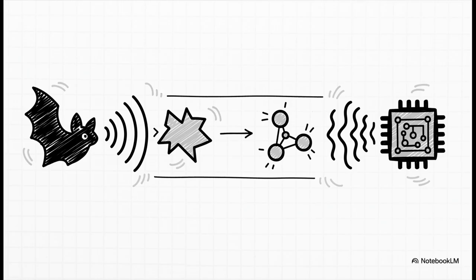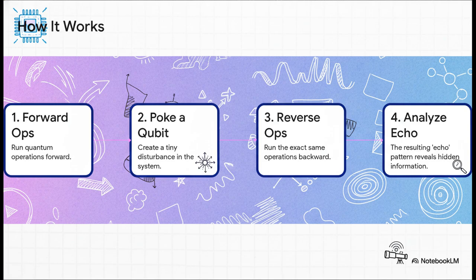Google's algorithm does a quantum version of that. It sends a signal through the system, gives it a tiny poke, runs the whole thing backward, and then analyzes the echo that comes back. This four-step dance is just pure genius. When you run the operations forward and then backward, you create this interference pattern. And that echo you get back isn't just random noise. It's a faint, but totally readable signal that tells you all this hidden information about how the different parts of the quantum system are talking to each other.